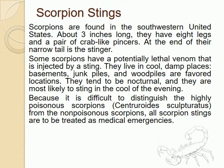Scorpion stings. Scorpions are found in the southern United States, about four inches long. They have eight legs and a pair of crab-like pincers. At the end of their narrow tails is the stinger. Some scorpions have potentially lethal venom that is injected by a sting. They live in cool, damp places — basements, junk piles and woodpiles are favorite locations. They tend to be nocturnal and are most likely to emerge in the cool of the evening. Because it is difficult to distinguish the highly poisonous scorpions from the non-poisonous ones, scorpion stings are to be treated as medical emergencies.